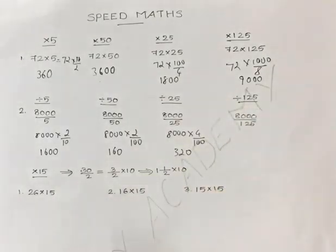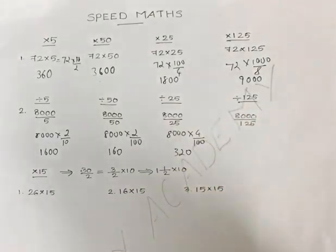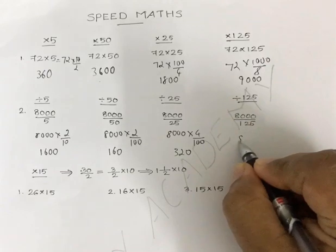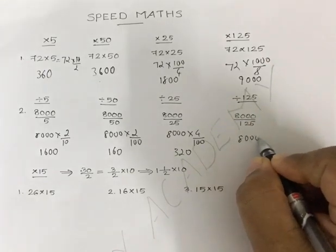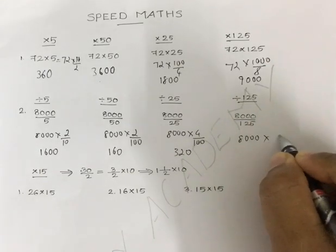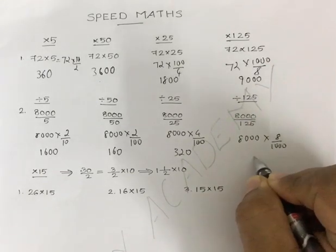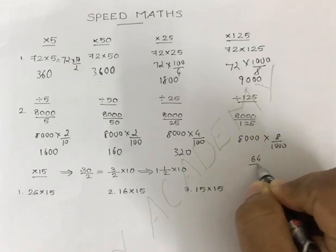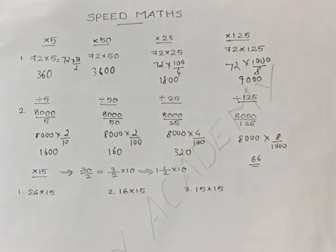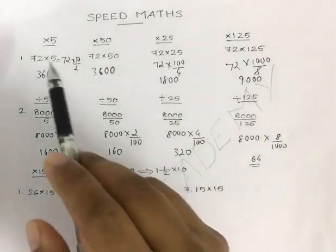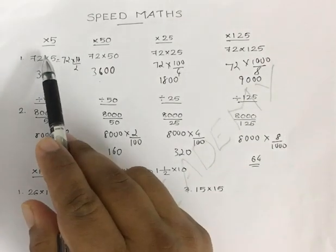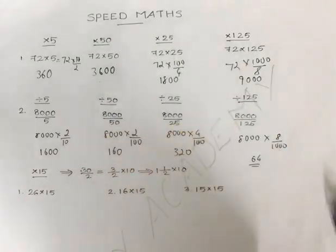And finally, divided by 125 — which is the most important one — it is 8000 into 8 by 1000, and the final answer is 64. So that's how we multiply and divide with 5, 50, 25, and 125.